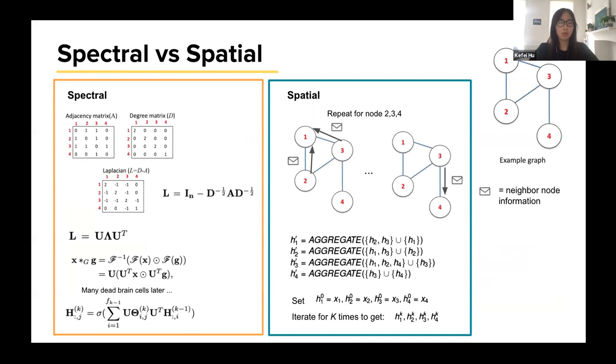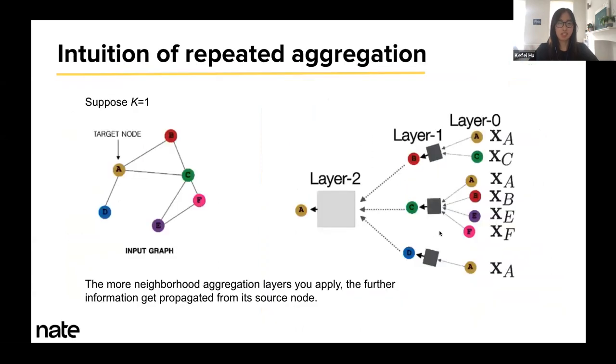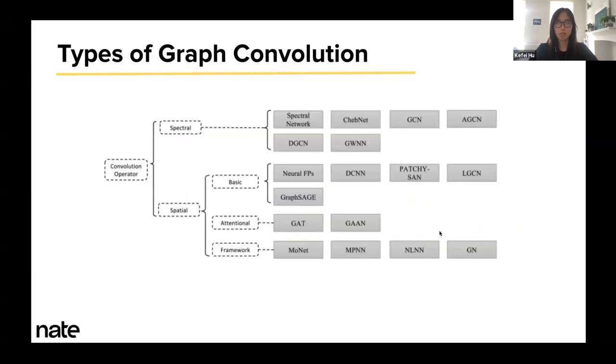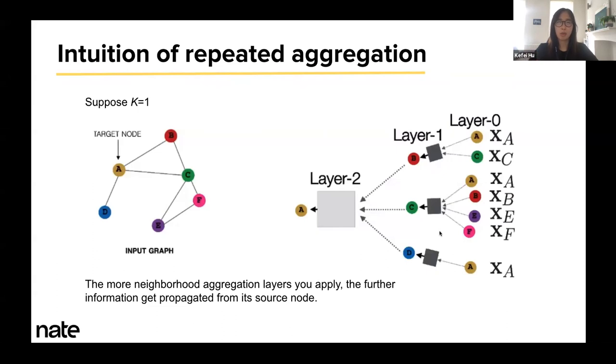Going back to the algorithms of these two approaches, we see that both of them involve applying the convolution layer repetitively. The intuition for this is that every time we apply the aggregation layer, we would propagate the information up to one hop. The more layers you apply, the further the information gets propagated from its source node. Therefore, the richer your final embedding would become.